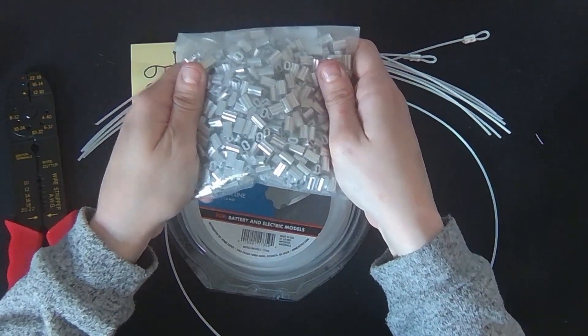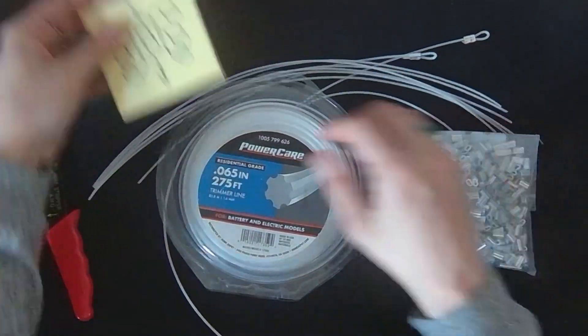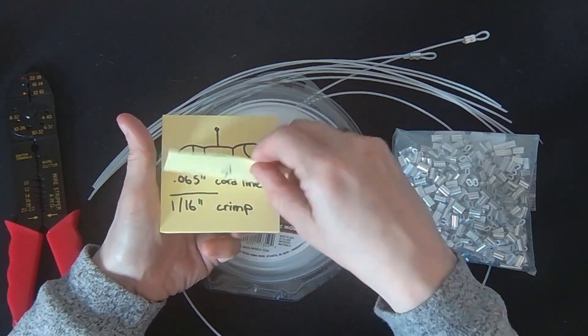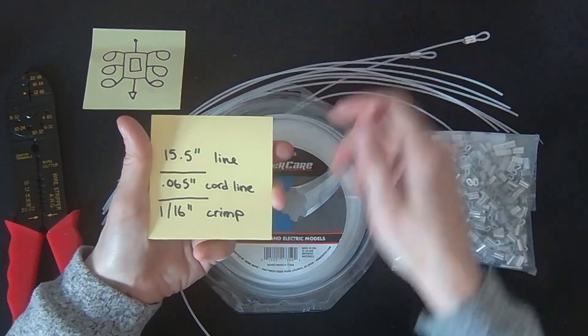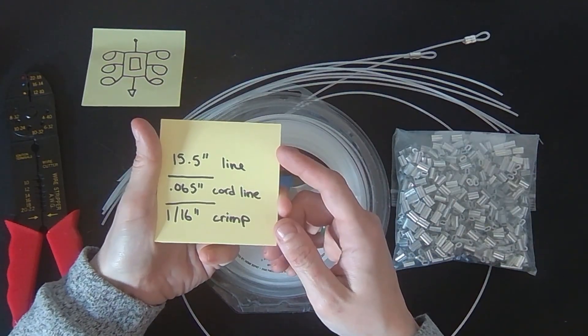Now, these are the crimps, and they are 1/16th inch. So here are the measurements of everything. You're going to want to cut that line to 15.5 inches. The cord is 0.065, and then those crimps are 1/16th.